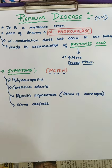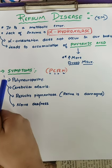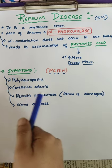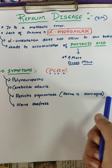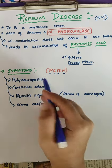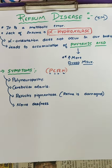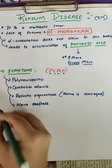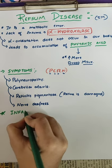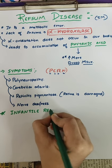So these are the four main symptoms occurring in Refsum disease: polyneuropathy, cerebellar ataxia, retinitis pigmentosa (which means retinal damage), as well as nerve deafness — PCRN.